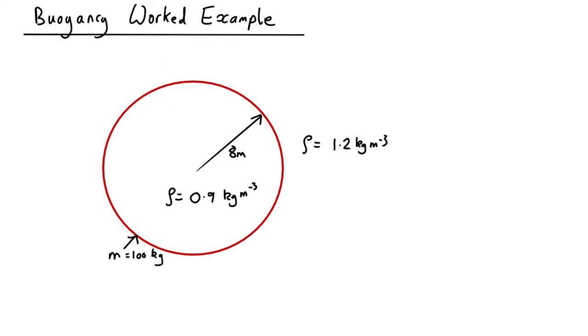Let's do a worked example to see how we'd actually apply this. Let's imagine we have a spherical balloon, radius 8 meters, and it's full of hot air which has a density of 0.9 kilograms per cubic meter, as opposed to the density outside which is a bit more. Let's say that all the fabric of the balloon weighs about 100 kilograms, and we want to know how much it could lift. So let's say we attach a cable to it, how much weight could we carry upwards?